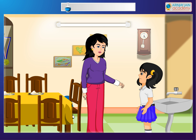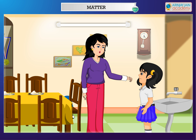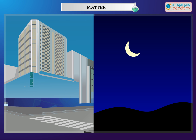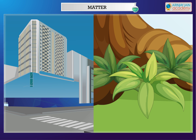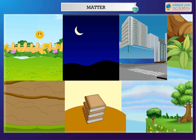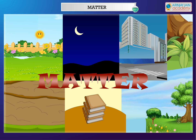Soap is solid and water is liquid. Let me explain to you. The earth we live on is a beautiful planet. There are many things around us — sun, moon, buildings, animals, plants, soil, books, air, etc. They are all made up of different materials, but have something in common: all materials are made up of matter.